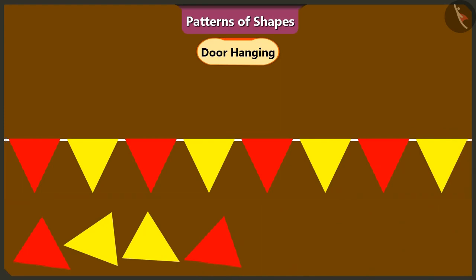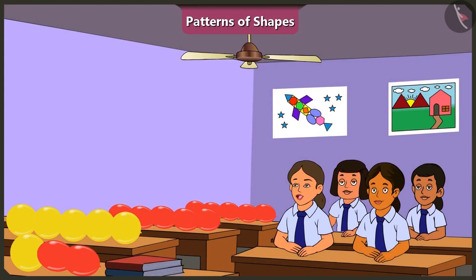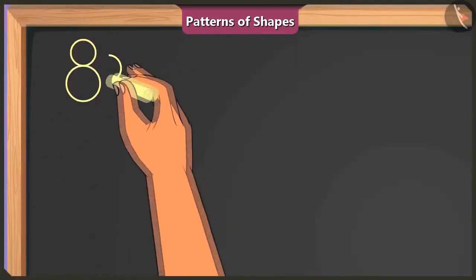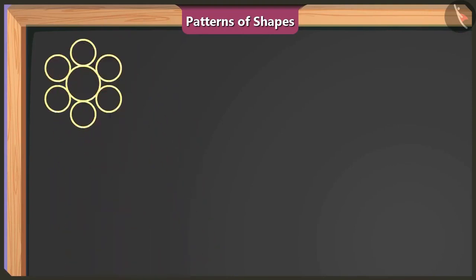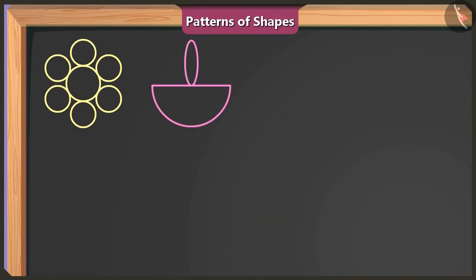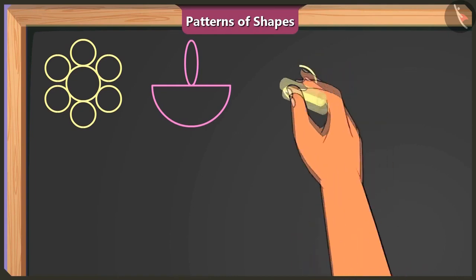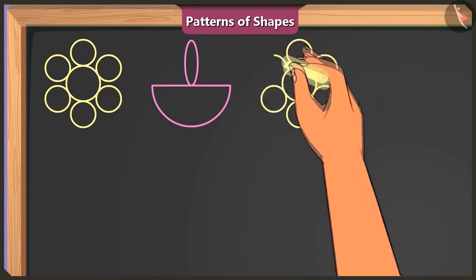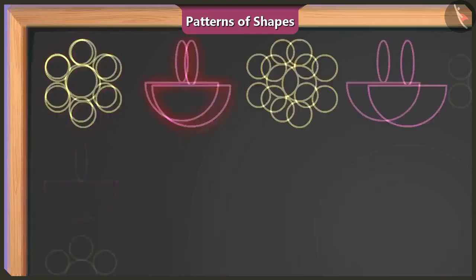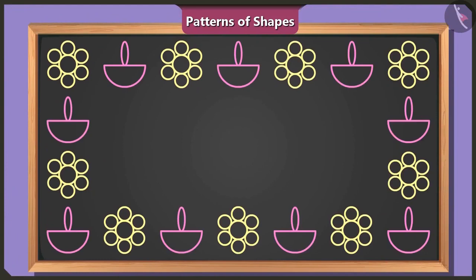Awesome! Both of you have done such a good job with the toren. Thank you, Ma'am. What do we do next? We need to decorate this board. On one corner of the board, we can use big and small circle shapes to make a flower. Next to this flower, I can draw a diya using a semi-circle and an oval shape. Next to it, I'll draw another flower using one big circle and some small circles. And again a diya with a semi-circle and an oval shape. We will keep repeating this sequence — a flower drawn from circles followed by a diya from a semi-circle and oval. This looks like a pattern. You have made a beautiful pattern.